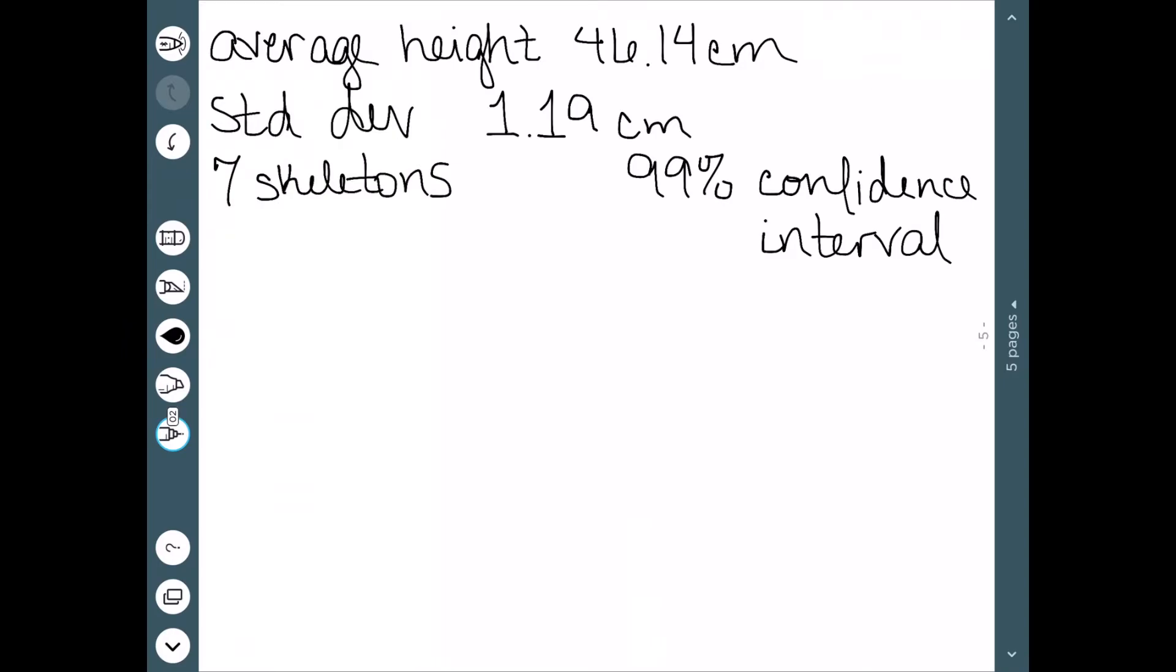Now that we're a little bit more comfortable with reading this table, let's actually try to do a confidence interval. So let's try a full example. Let's suppose that we found some new fossil skeletons of a previously unknown species. And we want to know their average height of this species. From these fossil skeletons, we have learned that the average height of the skeletons was 46.14. We also know that the standard deviation of the skeletons was 1.19. And finally, we know that we only found 7 possible skeletons of this.